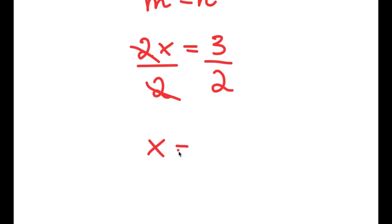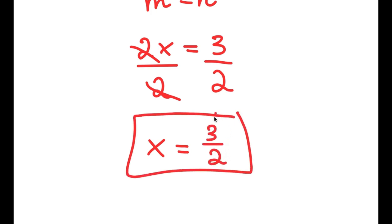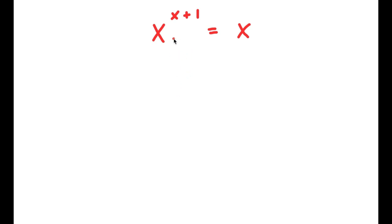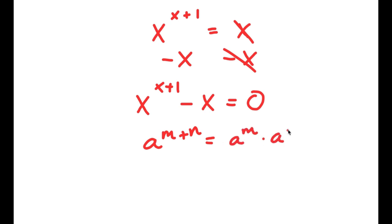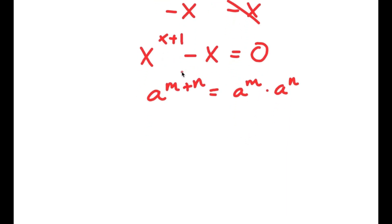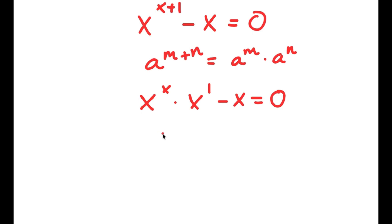Now for the equation x to the power of x plus 1 equals x, I'm going to start by subtracting x on both sides, so I'm left with x to the power of x plus 1 minus x equals 0. Now if I have something in the form a to the power of m plus n, this equals a to the power of m times a to the power of n. So x to the power of x plus 1 equals x to the power of x times x to the power of 1. So I have x to the power of x times x minus x equals 0. If I factor out x, I get x times x to the power of x minus 1 equals 0.